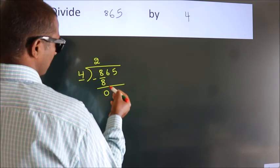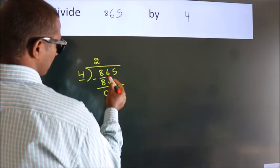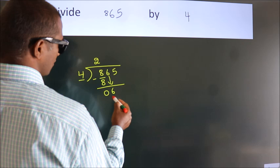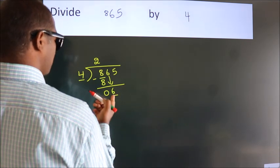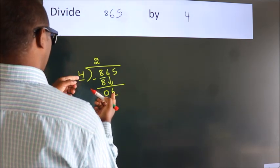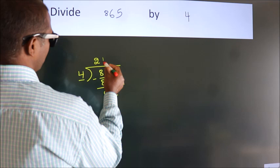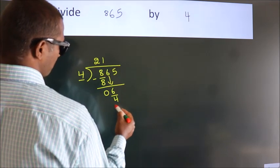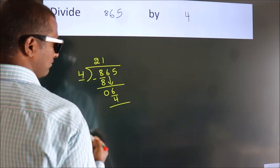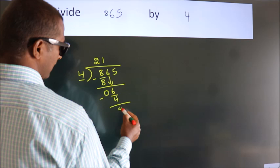After this, bring down the beside number. So 6 down. So 6. A number close to 6 in 4 table is 4 1s, 4. Now, we subtract. We get 2.